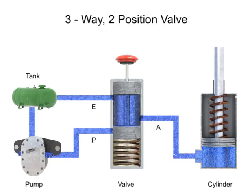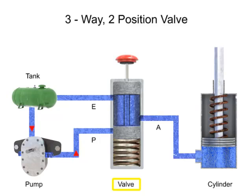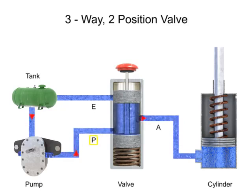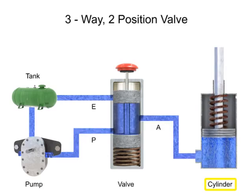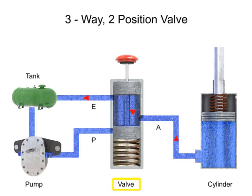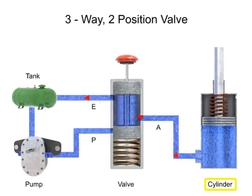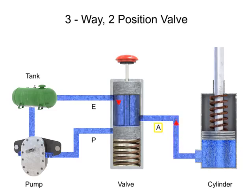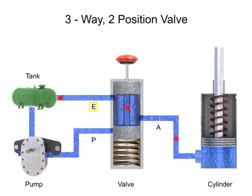Three-way directional control valves have many applications in fluid systems. One of the most common applications is for the control of single acting cylinders. In this application, fluid is pumped from a tank to pressure port P. With the valve in the normal position, fluid is blocked. When the valve is actuated, fluid flows from pressure port P through outlet port A to the cylinder. The cylinder extends and remains extended until the valve changes positions. When the valve de-energizes, the spool returns to position 1, pressure port P is blocked and exhaust port E is opened. The cylinder retracts and fluid flows from the cylinder through port A and out exhaust port E. From there, the fluid returns to the tank.